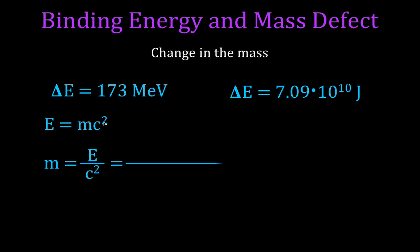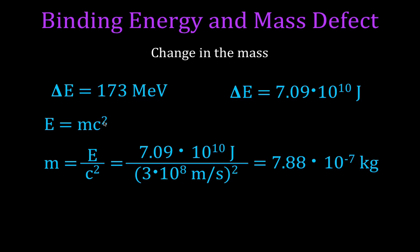Taking our 7.09×10¹⁰ joules and dividing by the speed of light squared, we find the mass is 7.88×10⁻⁷ kilograms. That's not very much mass — remember, we started with one gram. In grams, that's just 0.000788 grams, a very small change in mass.